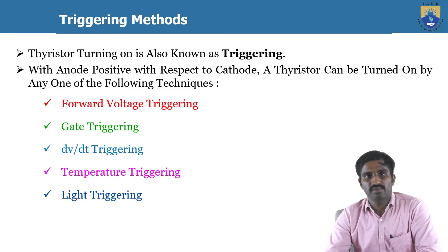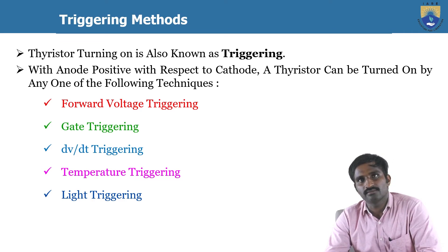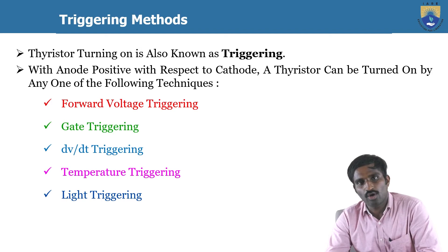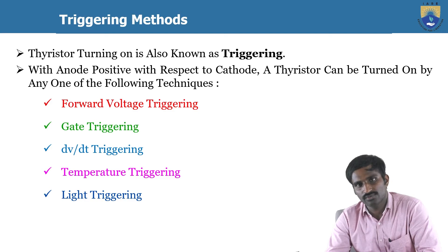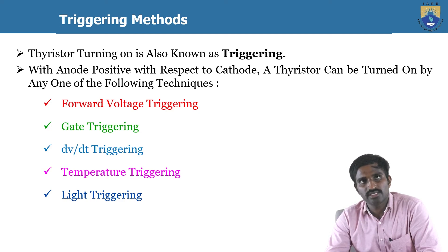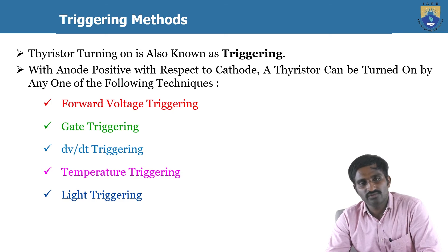The next topic is the triggering methods. The process of turning on the SCR or thyristor is called triggering. There are mainly five triggering methods: forward voltage triggering, gate triggering, dV/dt triggering, temperature triggering, and light triggering. The condition to turn on the thyristor is: anode must be positive with respect to the cathode, i.e., forward biased.